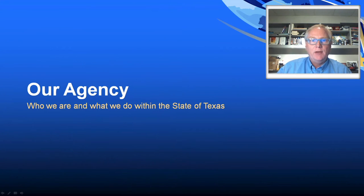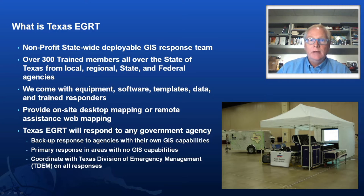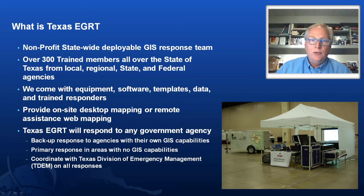Let me start off by saying a bit about our agency, the Texas Emergency GIS Response Team, and give you an idea of what we do across the state. We are a 501c3 nonprofit in the state of Texas. We have over 300 trained members, and these come from municipal government, from private industry, from county, state, and regional agencies all over the state. Each of those will provide their time at no cost to come in and help run our operations.